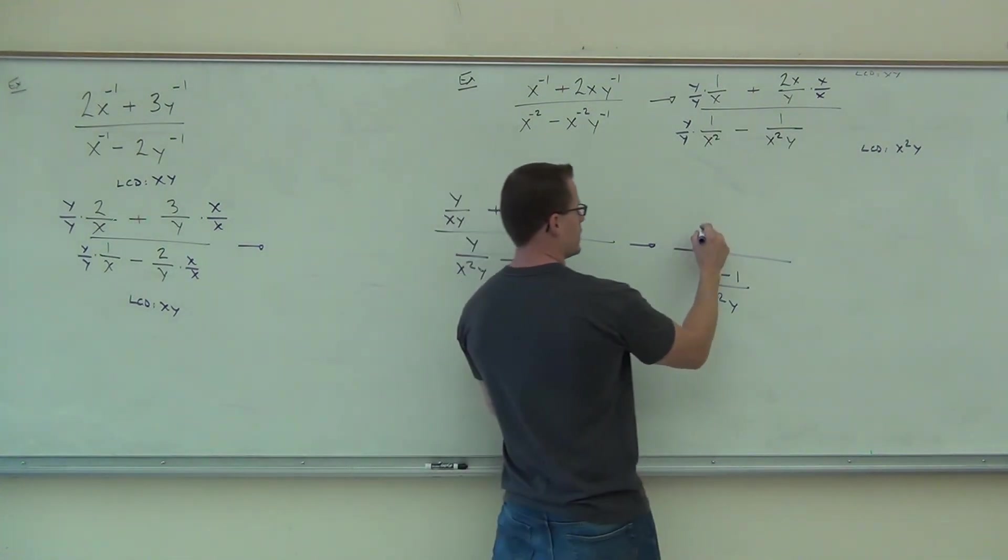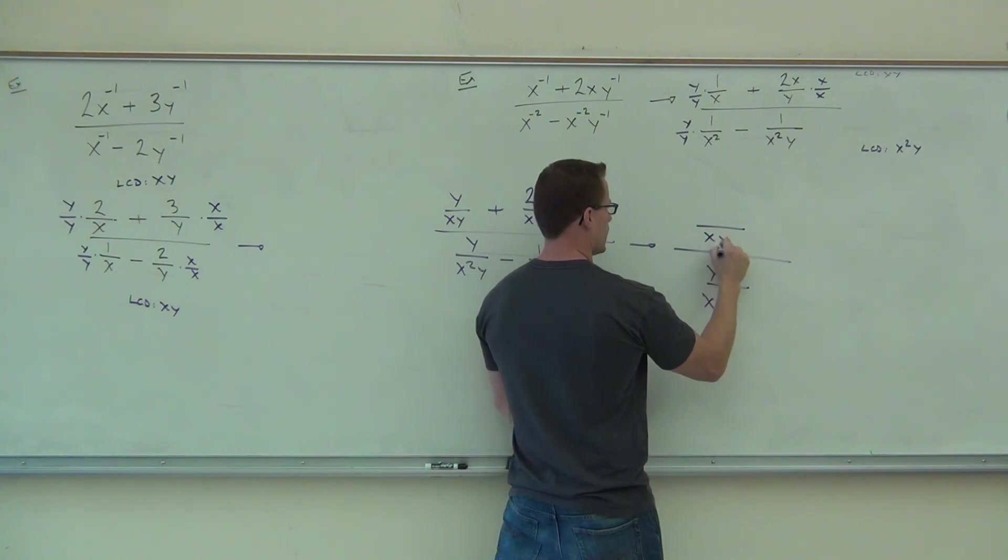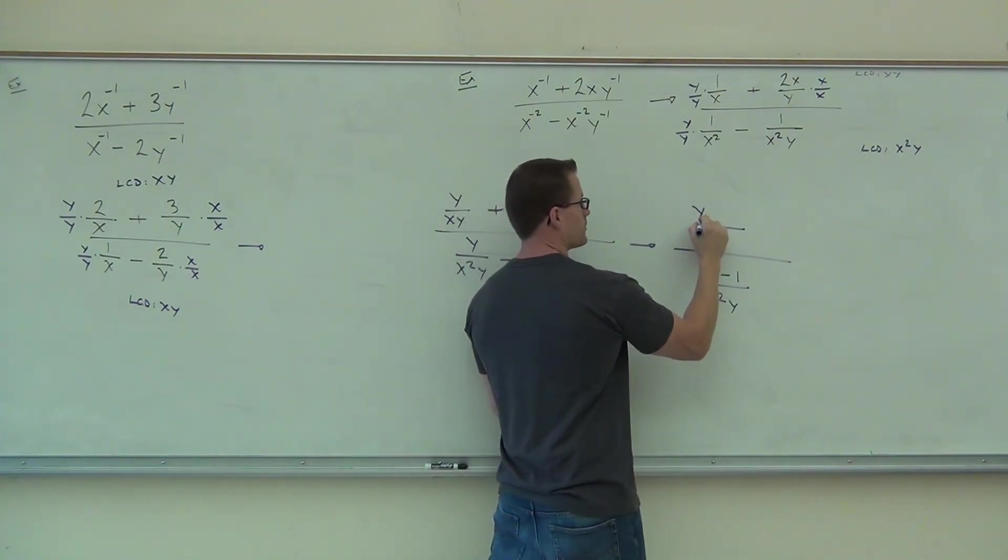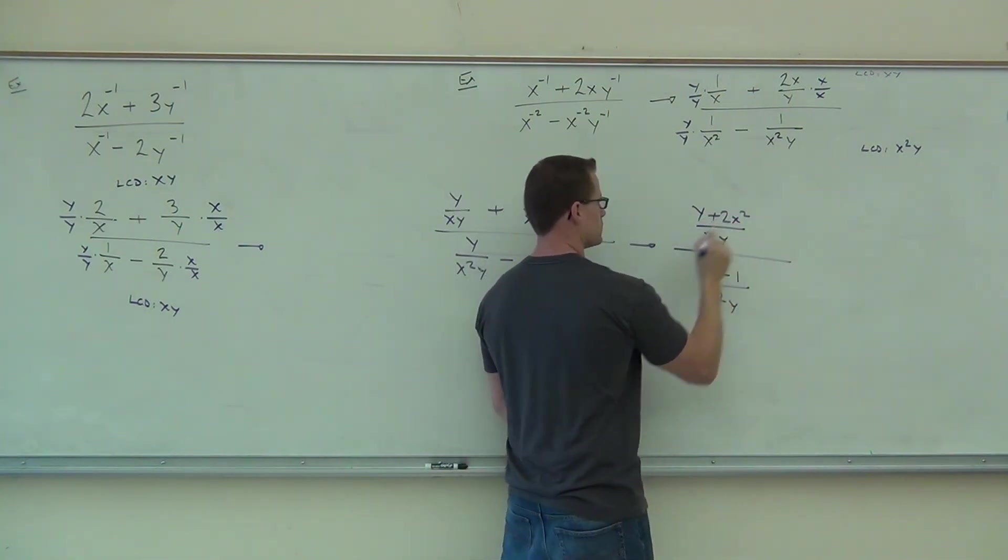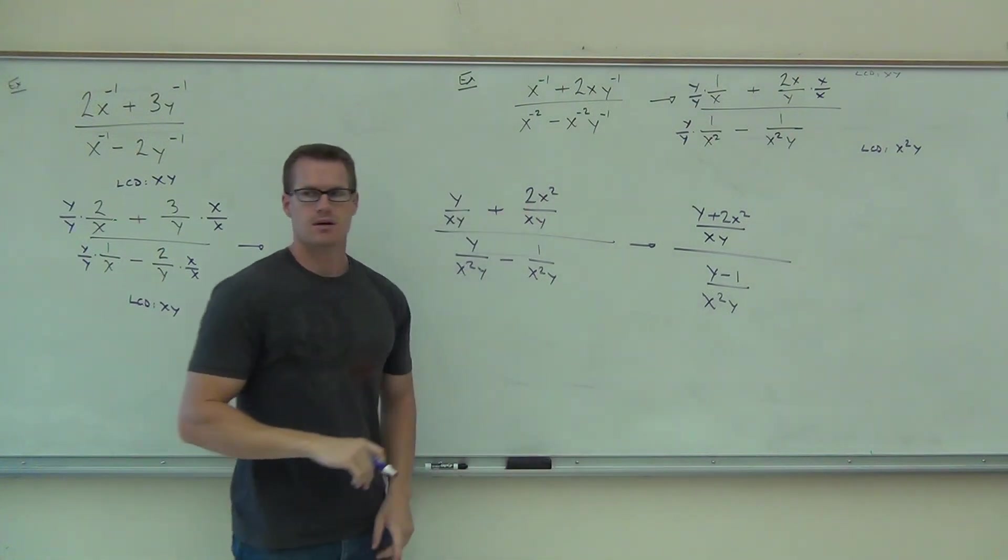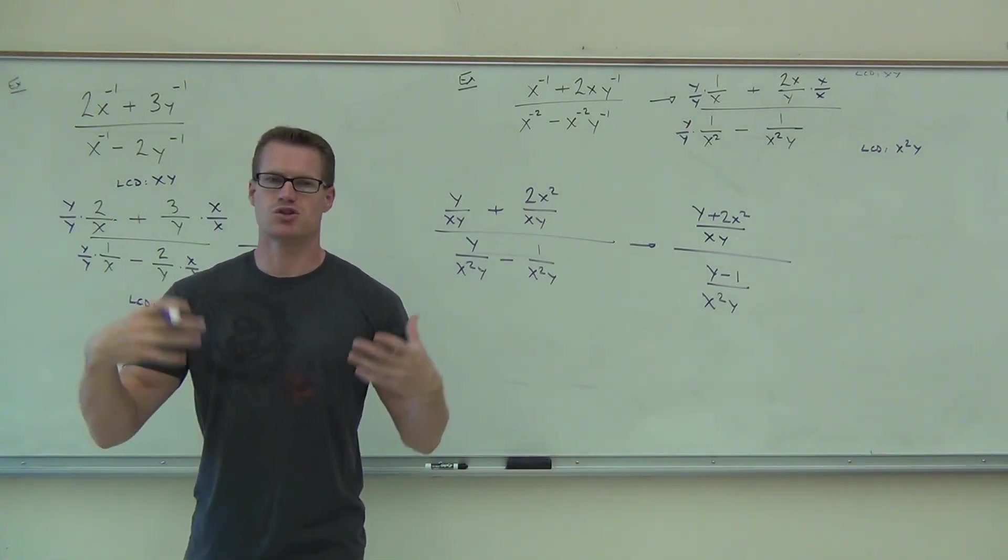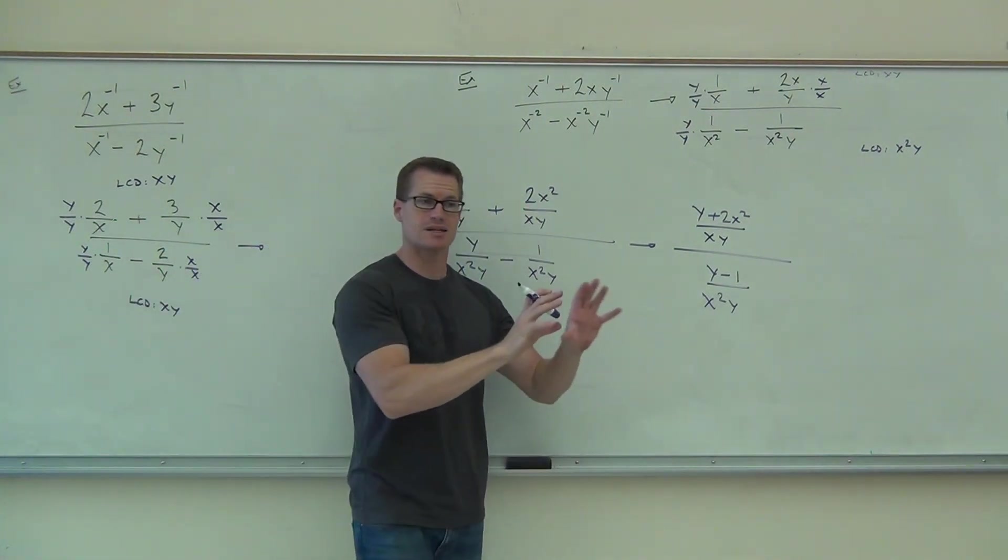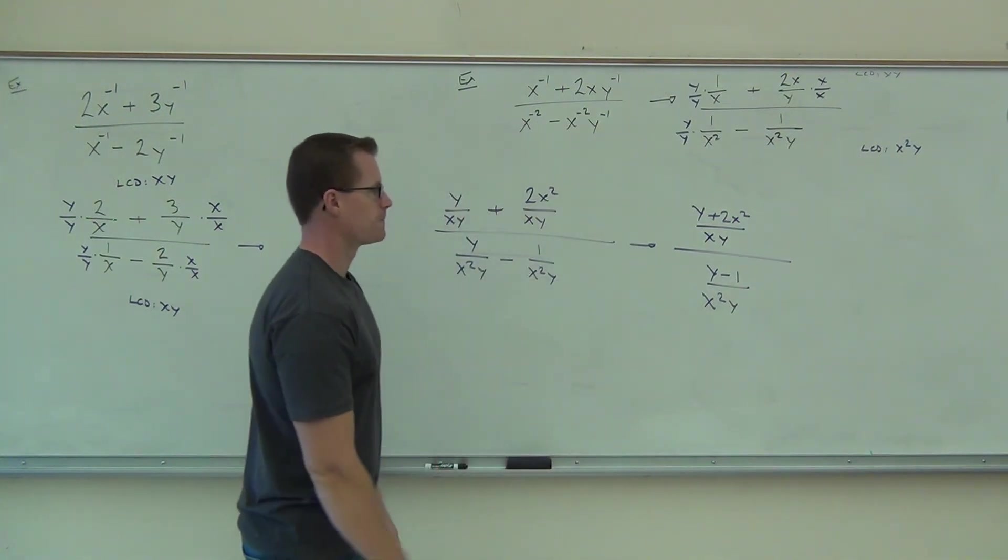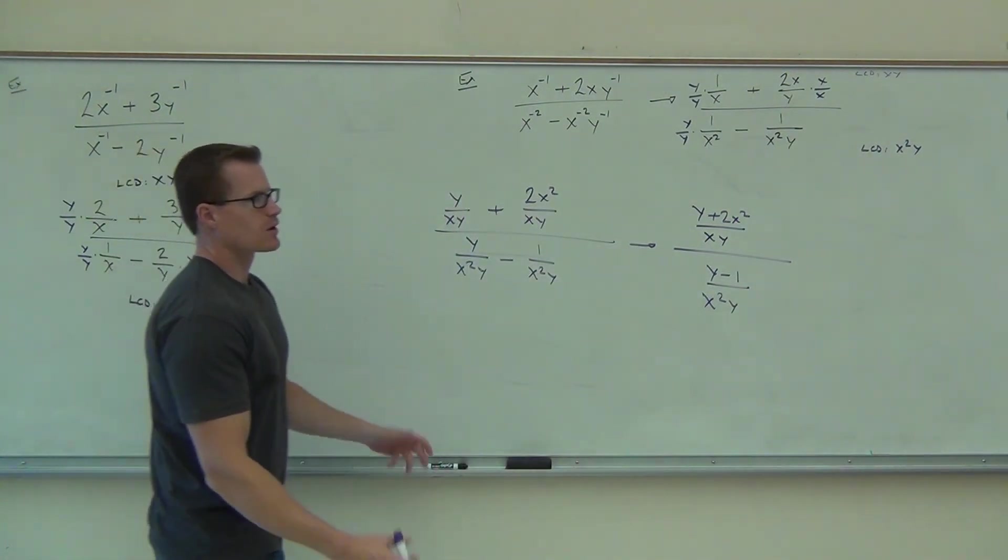On the numerator, you'll have xy, and you'll have 1 plus 2x over xy. Exactly what you have here. It's not like you're doing any math on this case. You're just making one fraction out of it. You're just writing exactly, spot for spot, what you had.